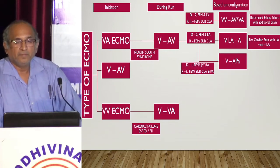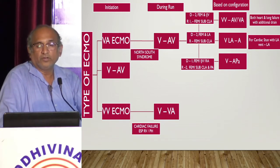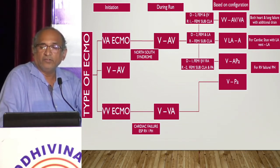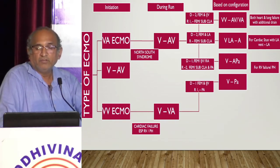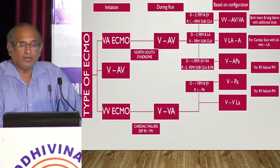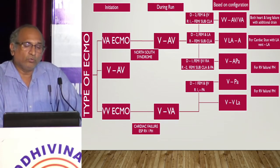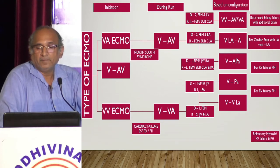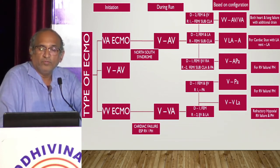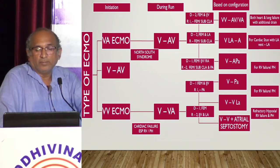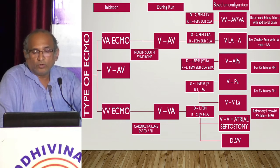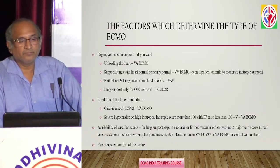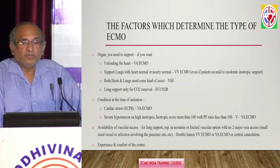For VLA-VA — cardiac stunning with LA vent — you drain both from the vein and the left atrium (drainage from femoral vein and LA, return to femoral artery or subclavian artery). For VPA, you use one drainage and two returns — one to the femoral artery and one to the pulmonary artery — for RV failure or high pulmonary hypertension. For refractory hypoxia, RV failure, and elevated pulmonary pressure, you can also switch to VV-LA or do atrial septostomy. Using a double lumen cannula — label it DL-VV.